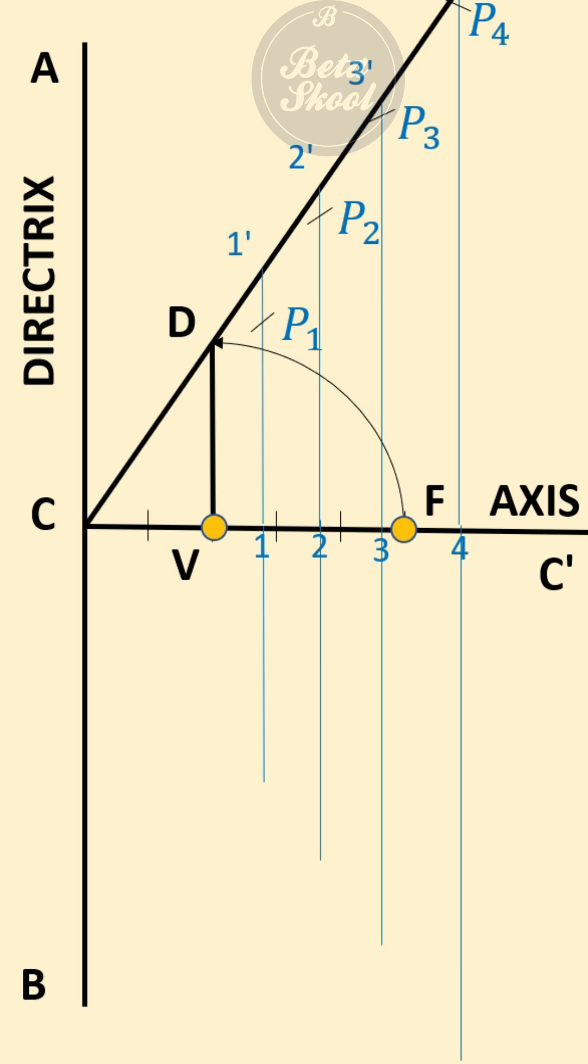Now join these obtained points like P4, P3, P2, P1, V, P1', P2', P3', and P4' with a smooth curve by freehand or using a French curve. This is the required hyperbola.